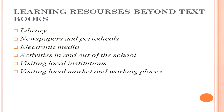Now, how is learning possible beyond the textbook? There are six learning resources: the first is library, the second is newspapers, the third is electronic media, the fourth is activities in and out of the school, the fifth is visiting local institutions, and the sixth is visiting local market and working places. We will talk about all these resources one by one in detail.